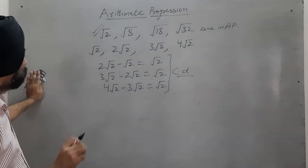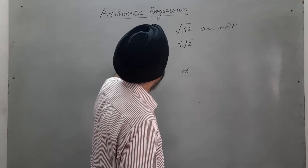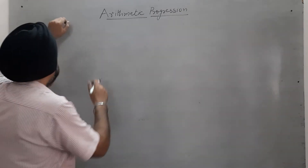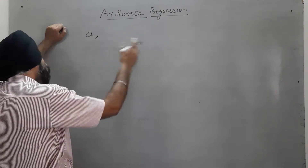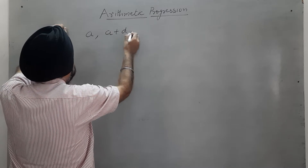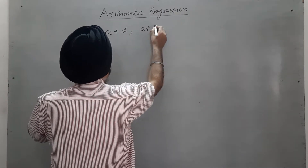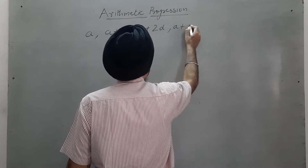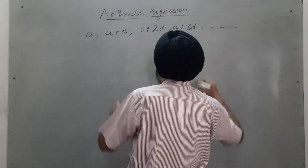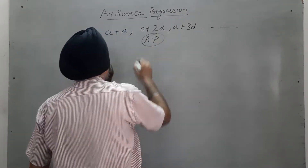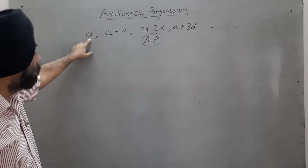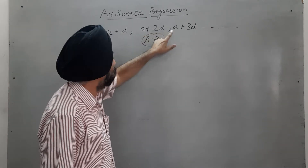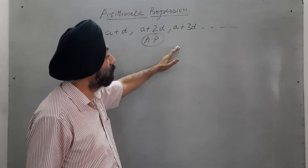This is the easiest way to do it — a very simple concept where only the common difference needs to be checked. In general, for an AP, the first term is A, the second term is A plus D, the third term is A plus 2D, the fourth term is A plus 3D, and so on.